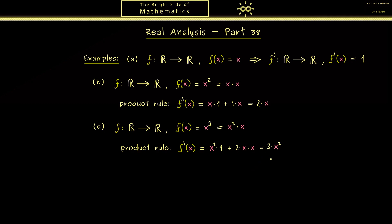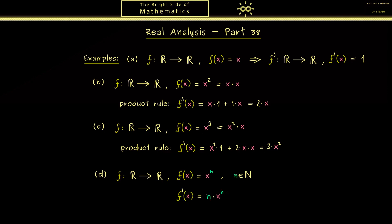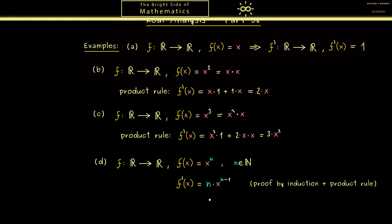In summary, everything together gives us 3 times x squared. Without dealing with difference quotients, we immediately got the derivative of the cubic function. Now you should ask: what is the general rule for the derivative when we have the function x to the power n? Looking at the examples, you might have a conjecture: put the original power in front and reduce the power by 1, giving n times x to the power n minus 1. This is correct and you can prove it by induction using the product rule — a good exercise for you.